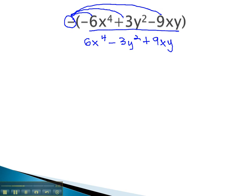And we have now found the opposite of our polynomial. The way we find the opposite is simply changing the sign on each term.